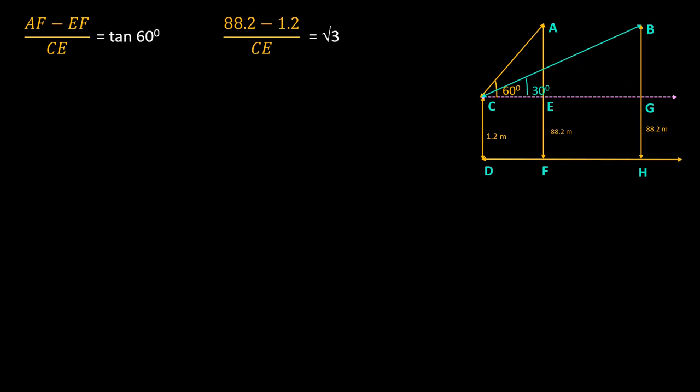To find the value of CE, I am subtracting 1.2 from 88.2. After subtraction, we have 87 in the numerator and CE in the denominator that is equal to root 3. On cross multiplication, we have CE equals 87 divided by root 3. 87 can be written as 29 into 3. 3 can be further written as root 3 whole square that is root 3 into root 3. Root 3 cancels. We got 29 root 3 meter that is the length of CE.